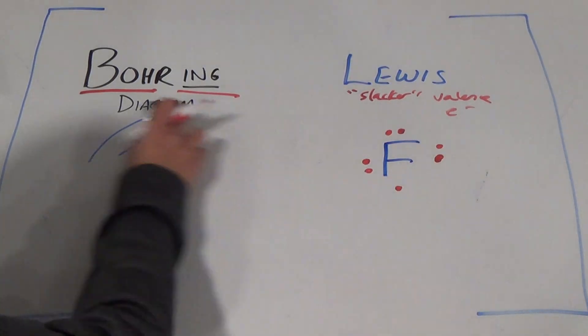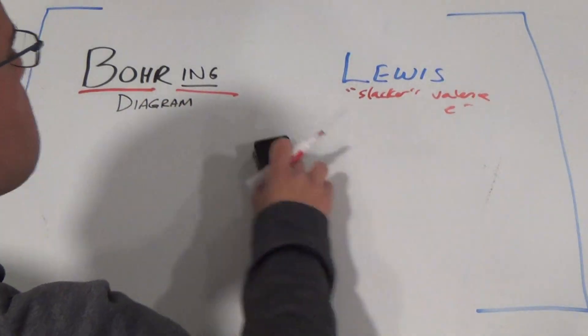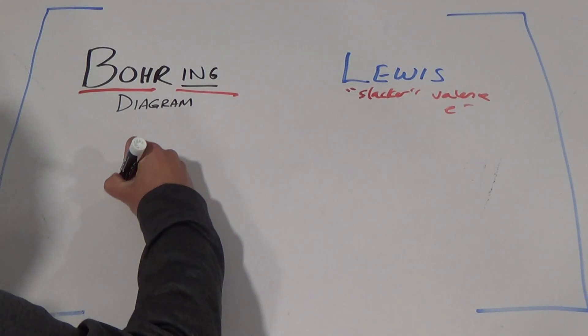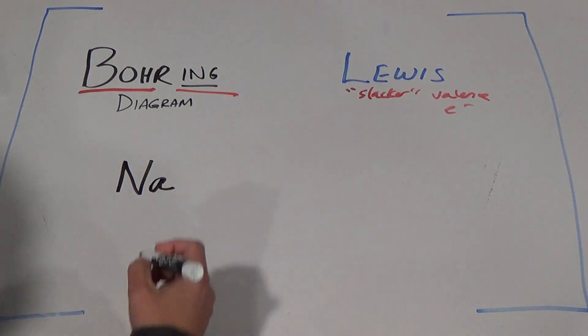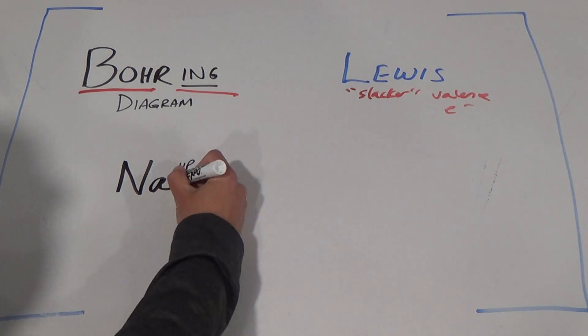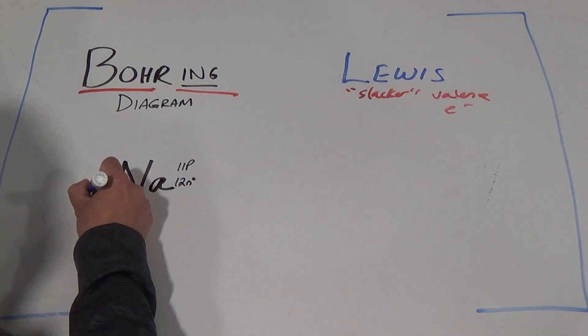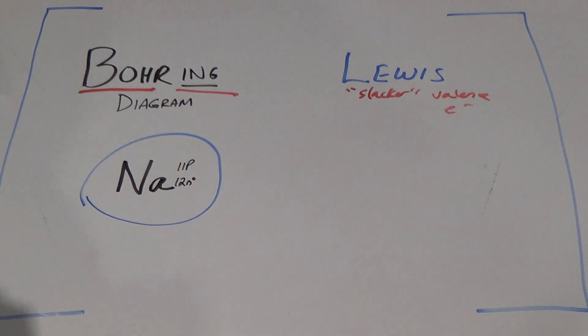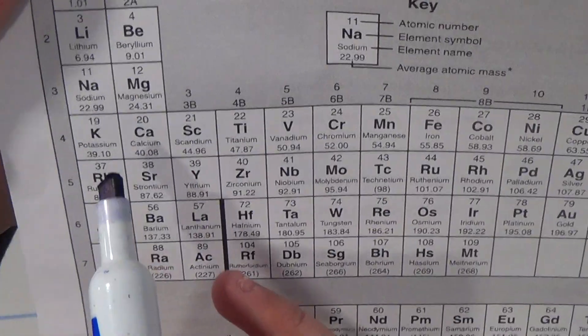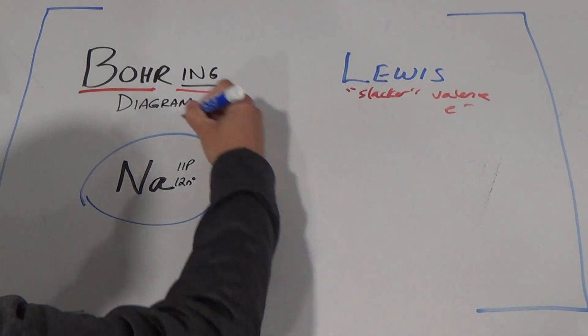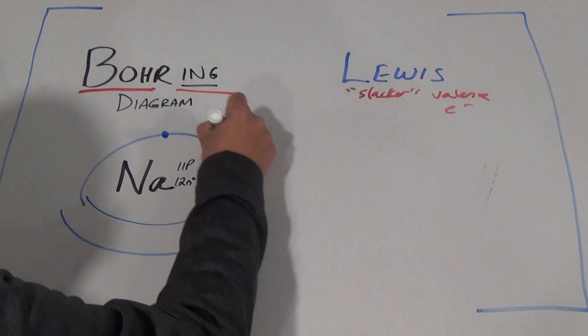Let's do sodium. Sodium. Boring. What we've got? We've got 11 protons, 12 neutrons. I've got 11 electrons. First level. And by the way, I'm on the periodic table now. If you take a look at where sodium is, sodium's in period three. Three levels. One, two, second level. Oh my gosh, are we done yet? Are we done?